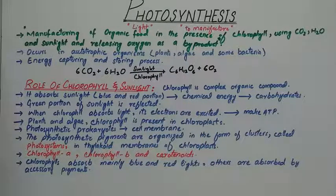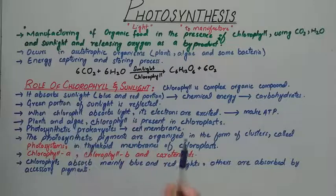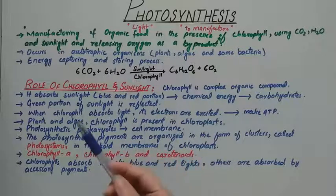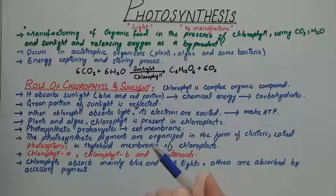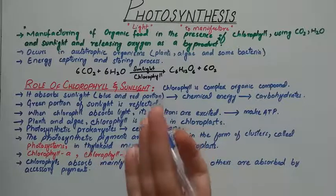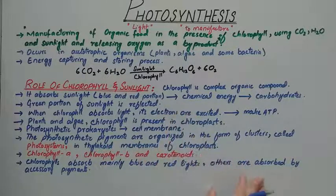We can say that photosynthesis is an energy storing and energy capturing process. Heterotrophic organisms cannot carry out photosynthesis and are unable to use the energy of the sun directly, because they do not have any such system by which they can manufacture their own food. Therefore, for their energy needs, they depend directly or indirectly on autotrophs.